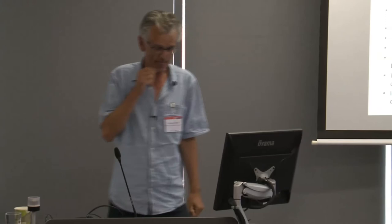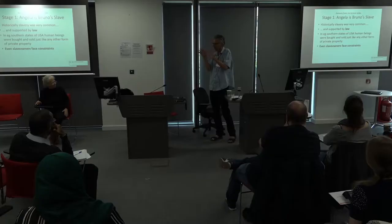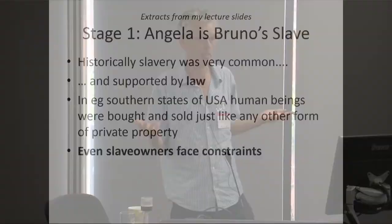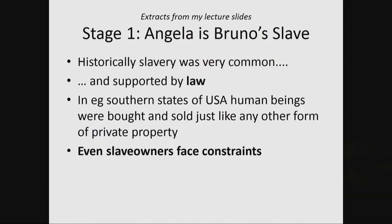Going through the various stages: the first stage I make completely explicit — the CORE sort of doesn't quite make it so explicit, but to me it's explicit: Angela is Bruno's slave. There's some back story: Angela was once a subsistence farmer leading her own happy life and optimizing her utility. Then along comes Bruno and steals it — and steals her. So we're talking about a very stark situation. The institutions do indeed matter because ownership of a person was once one of the institutions of life.